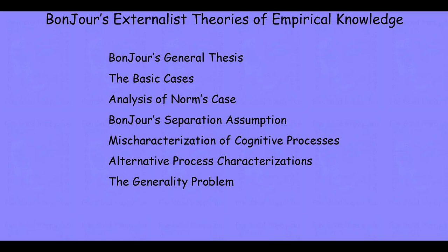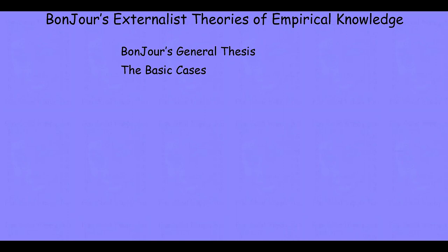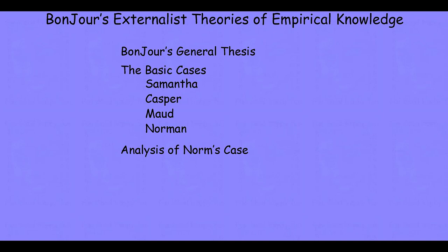So let's turn our attention to the first part of our lecture. We'll start by talking about Bonjour's general thesis, then go through each of the individual cases — talking about why each case is introduced and how it differs from the others. We'll start with Samantha, then Casper, then Maude, and finally ending with Norman.